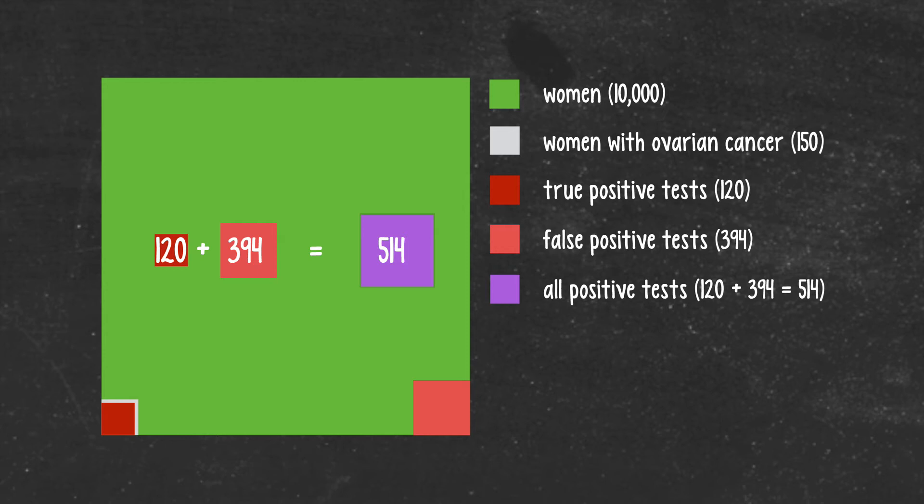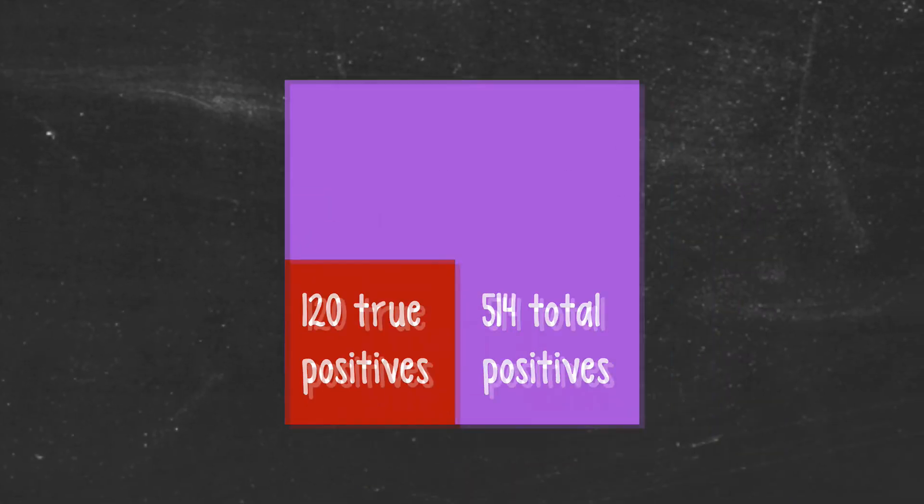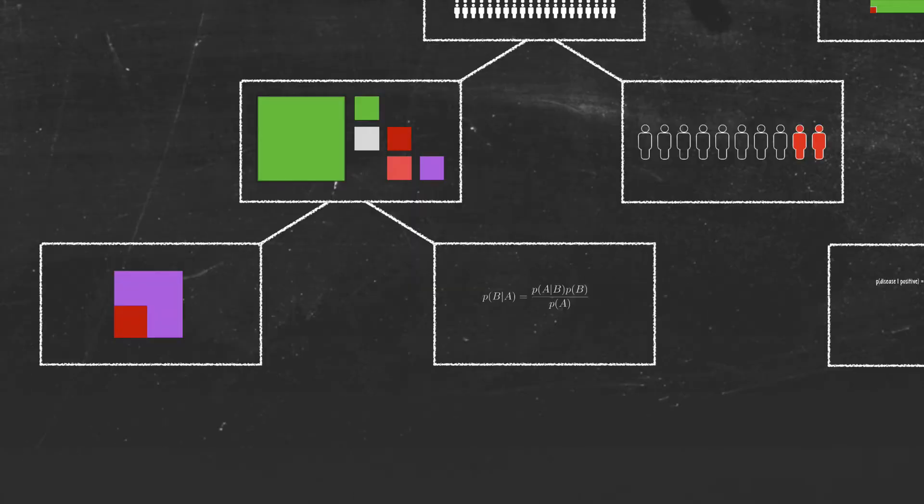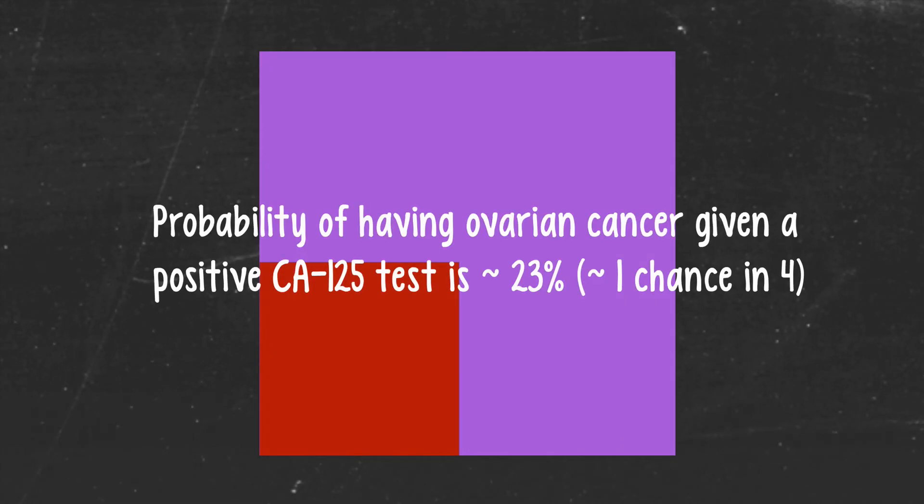So now we're in a position to answer that big question that every patient who gets a positive test will inevitably ask. What is the probability that I have the disease given that I had a positive test result? The answer seems obvious now. Out of the total of 514 positive test results, about 120 of them will be true positives. So the probability of having the disease given a positive test result is 120 over 514, or about 23%. So our intuitive approach to Bayes' theorem gives us the result that we described earlier. The probability of having ovarian cancer given a positive CA125 test is about 23%, or a little less than one chance in four.